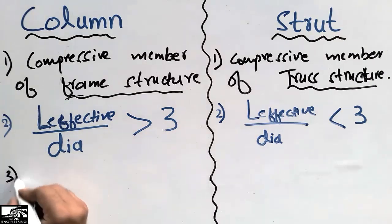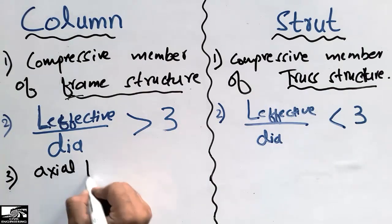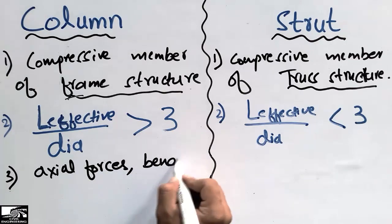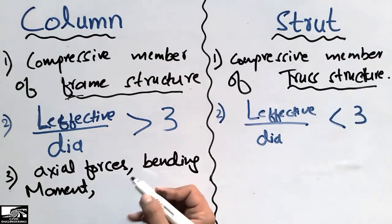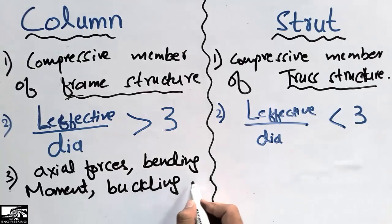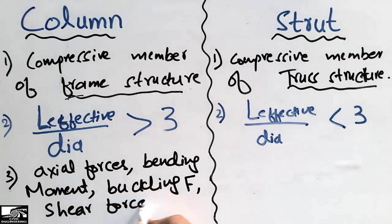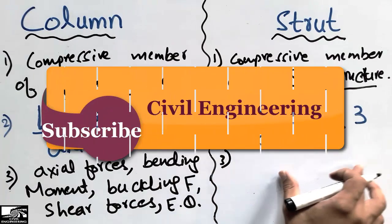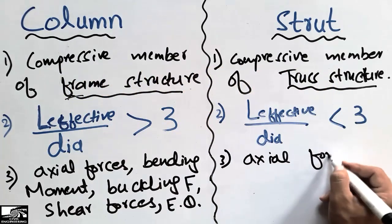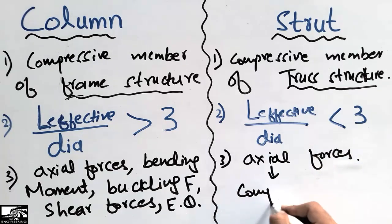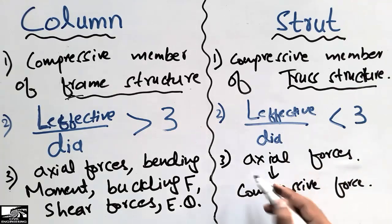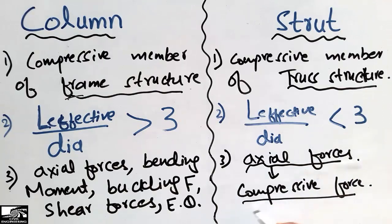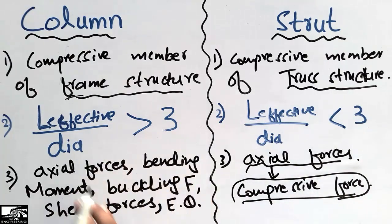The third difference is that the column is subjected to axial forces — which may be tensile or compressive — as well as bending moments, concentric moments, buckling forces, shear forces, and many others. It is also subjected to earthquake loading, that is, lateral forces. While the strut member is only subjected to axial forces, and this axial force is only compressive force. So the strut is only subjected to compressive axial forces, while the column is subjected to many other forces.